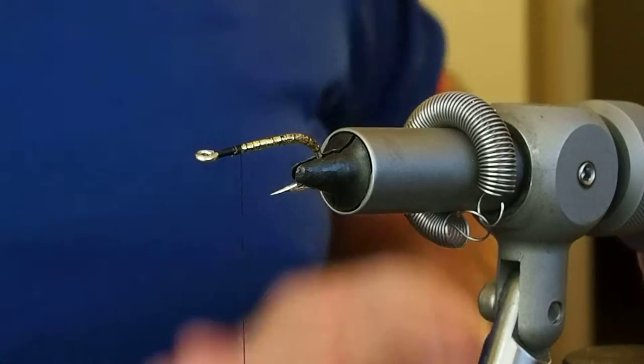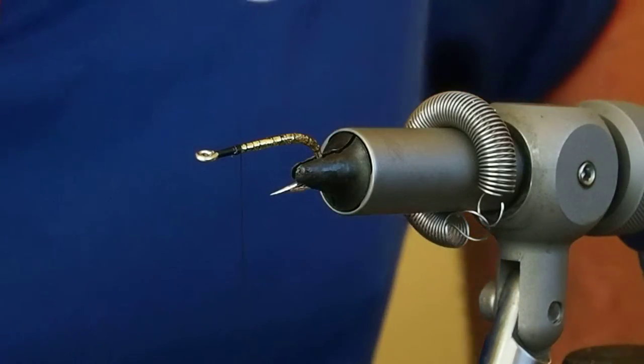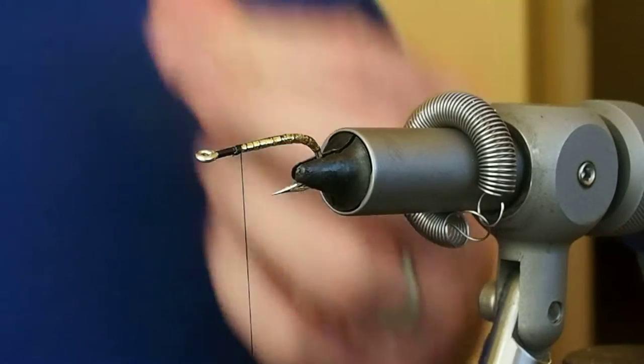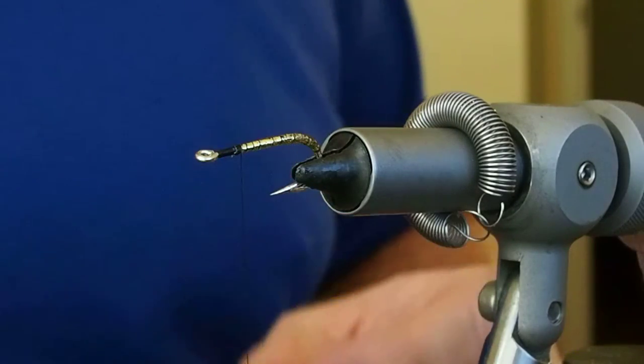Alright, for the wing, the pattern calls for a duck quill or flight feather, which I think is either a quill or pointer. I don't have any duck right now, so I'm just going to resort to using some turkey.